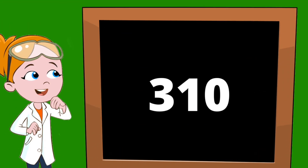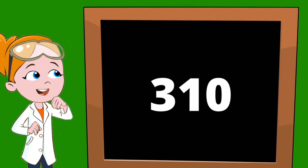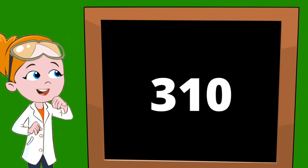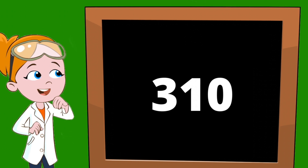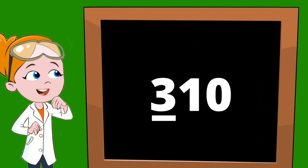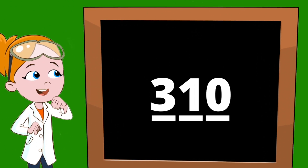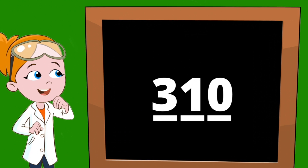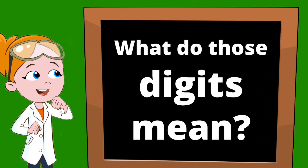Here's the number three hundred and ten. This number has three numbers in it: a three, a one, and a zero, which means it has three digits — one, two, three. Each of those digits has a value.